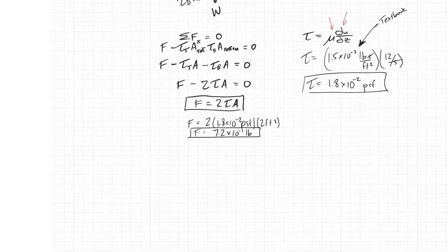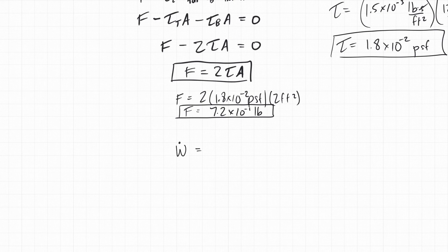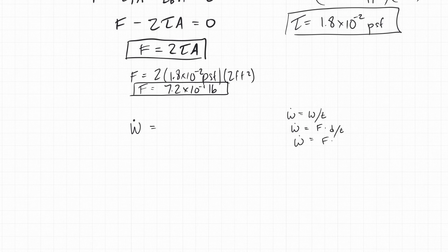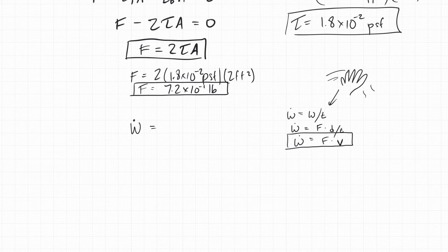How do we get at power? Power is work per time, which is force times distance per time — or force times velocity. That's a bit hand-wavy, but it will help you remember the formula. So rate of work equals force times velocity.